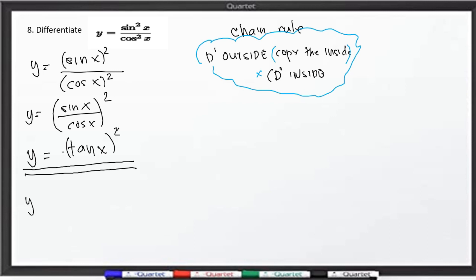So y prime is equal to 2, copy the inside, tangent of x. So 1 na lang po ito. So times the derivative of the inside, the derivative of tangent x with respect to x is equal to secant squared x. du dx, eh 1 lang po yan. So times 1. x lang po yan, kaya 1. Therefore, y prime is equal to 2 secant squared x times tangent of x. And that will be our answer.